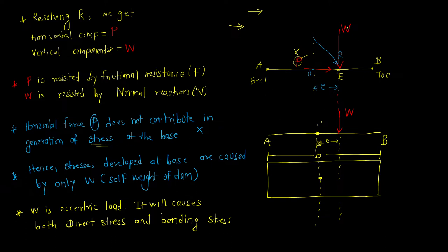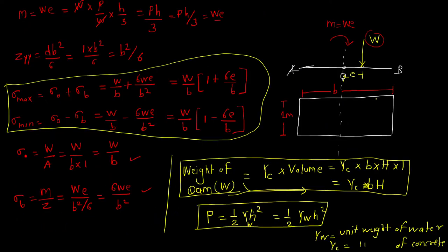The only force generating stresses is W. This W is an eccentric load acting on the base of the dam. Hence, we use the traditional concept of finding stresses at the base with an eccentric load. The moment produced is W into e. By calculating sigma max and sigma minimum, we get the stresses at the base of the dam. Now we will start with the analysis of the trapezoidal dam.